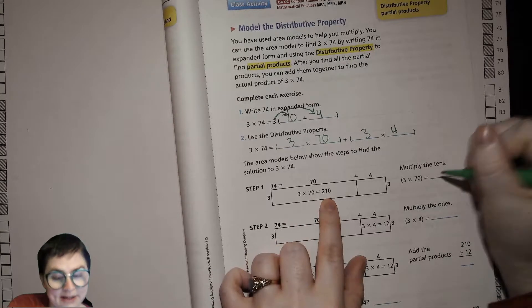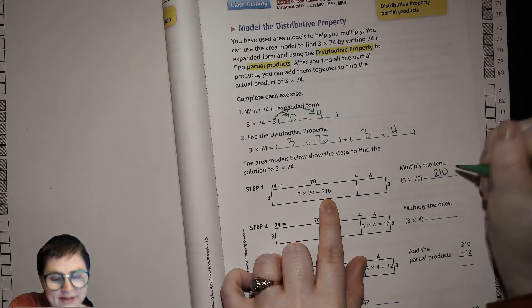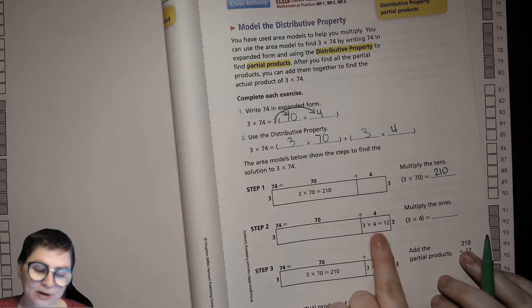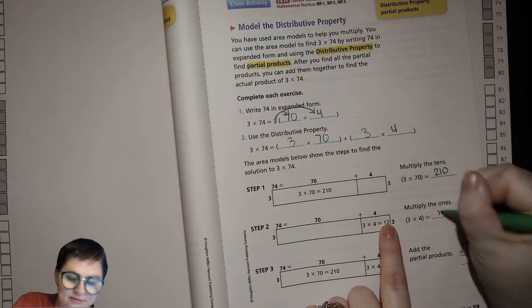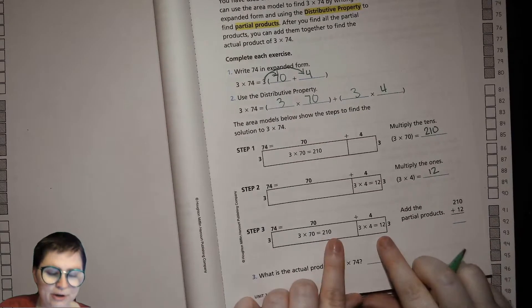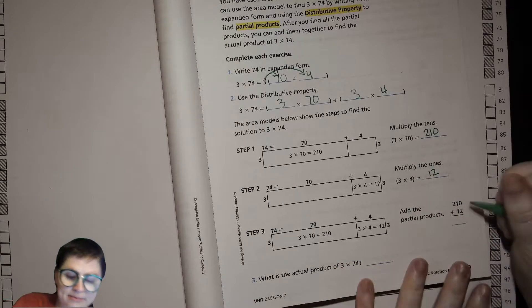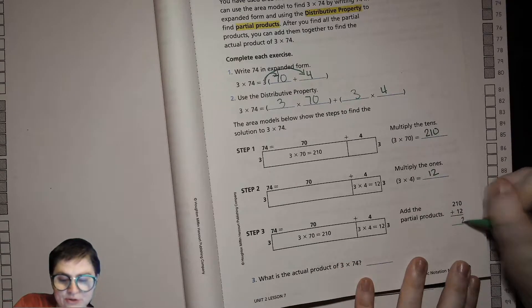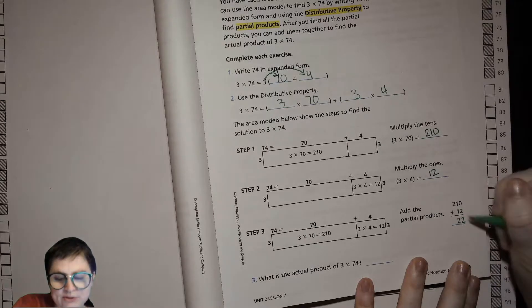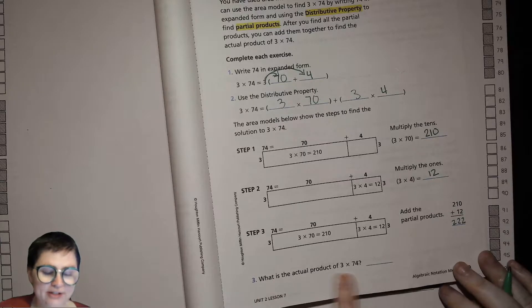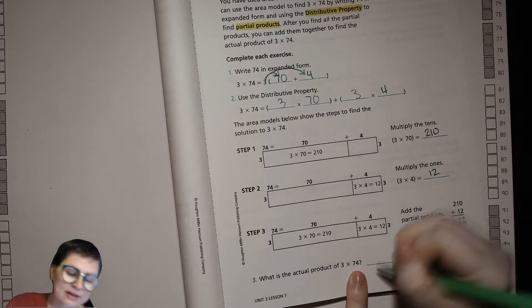Now we can use our area model and we can see 3 times 70 is, well 3 times 7 is 21 so 3 times 70 is 21 tens or 210. And then we'll do the second partial product 3 times 4 which is 12. Then we'll take our two partial products of 210 and 12 and we will add them together.